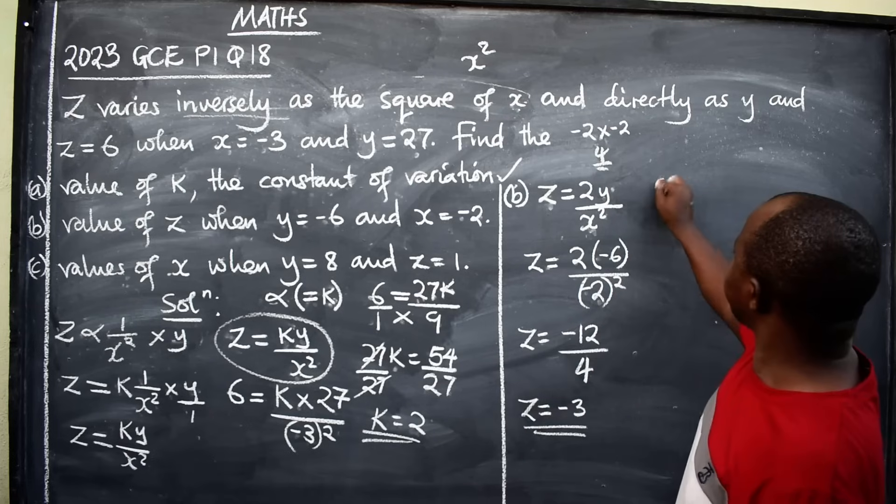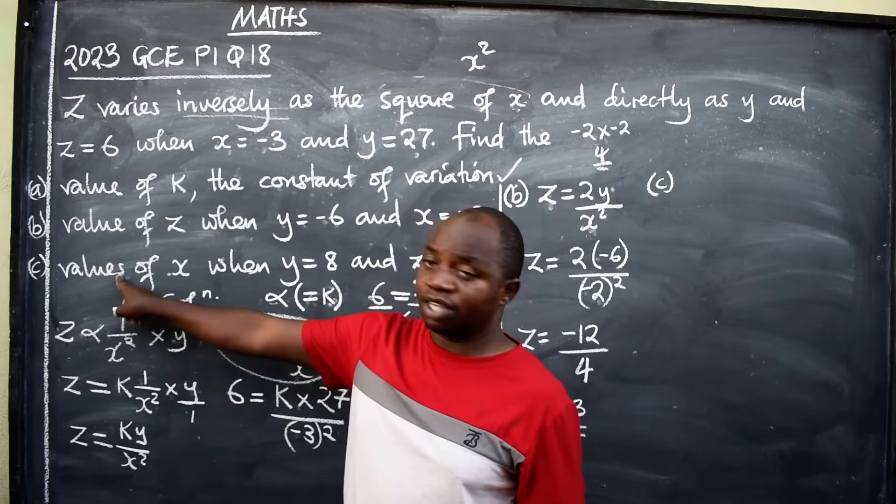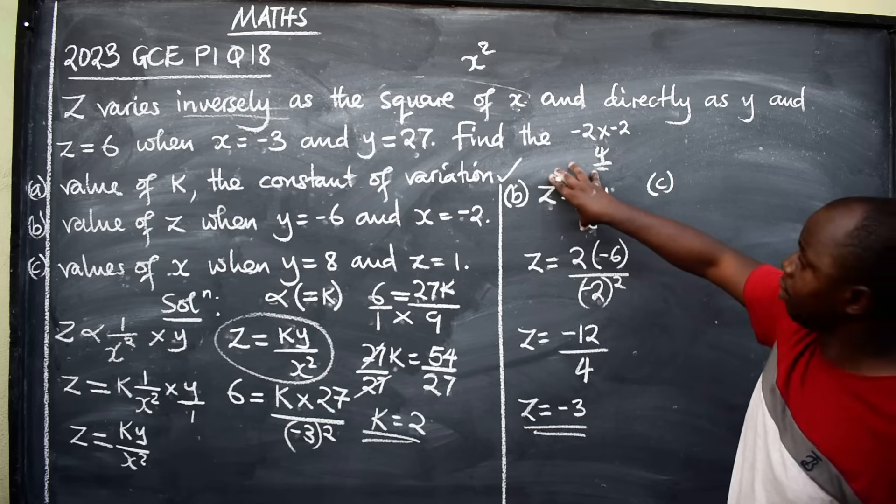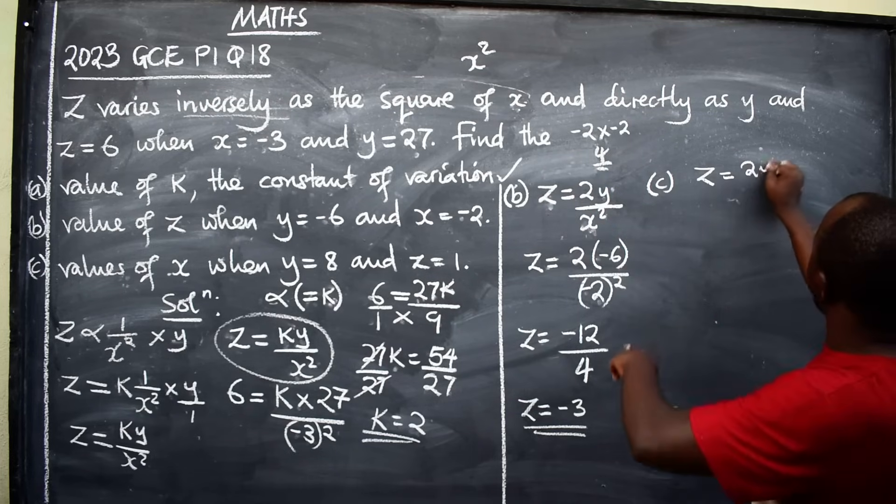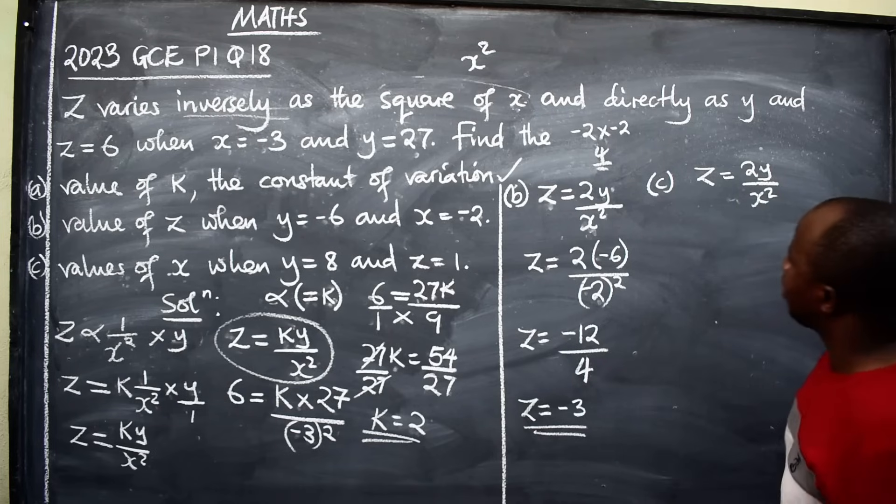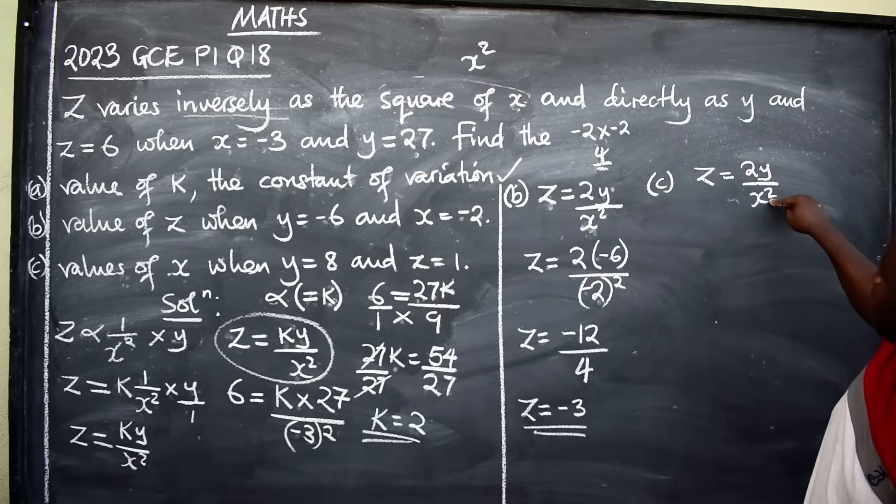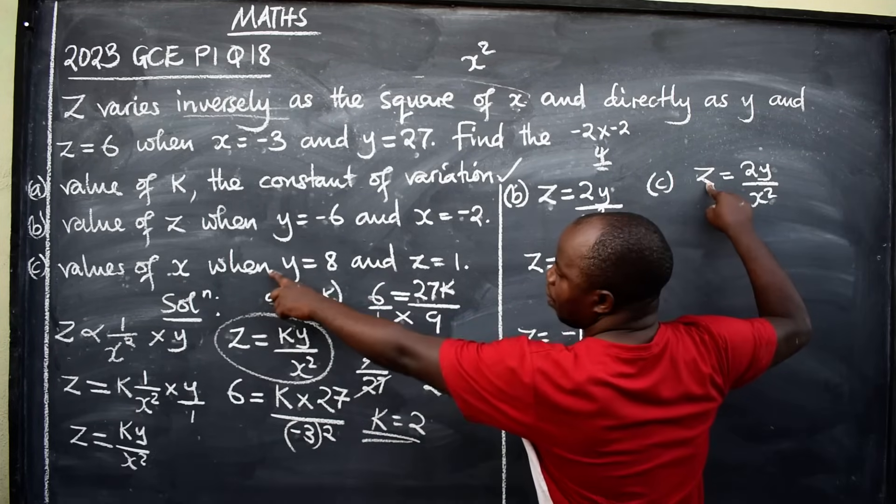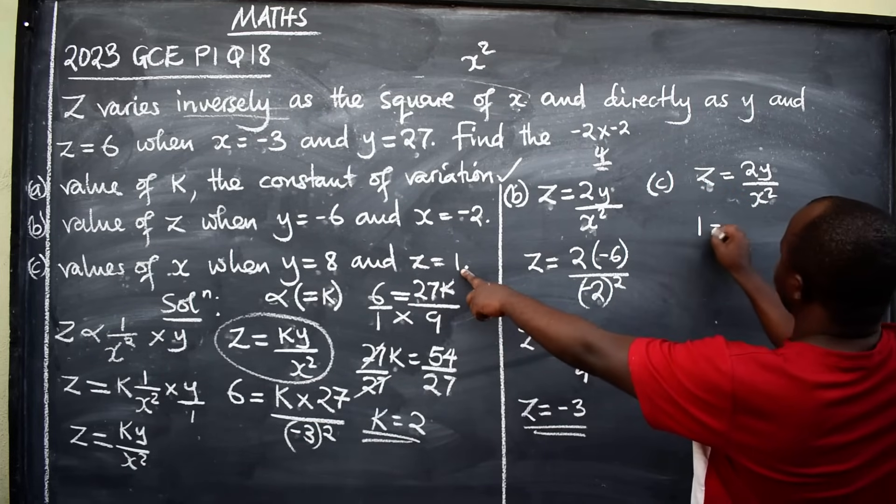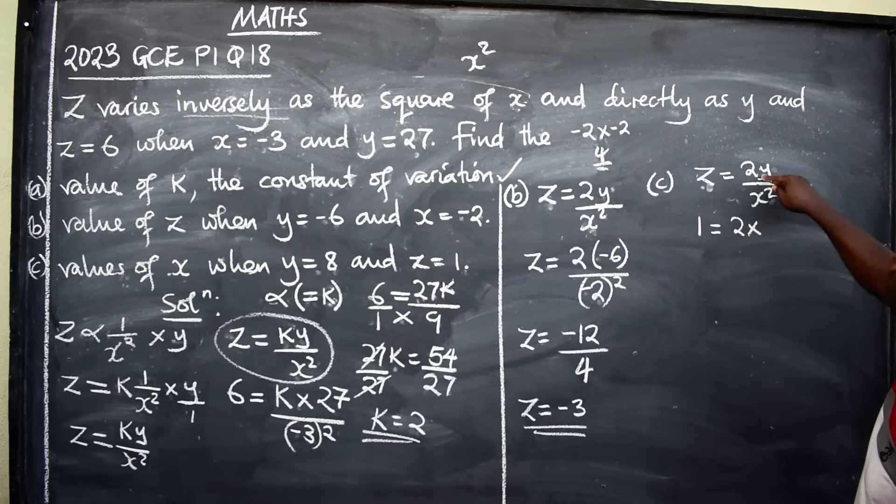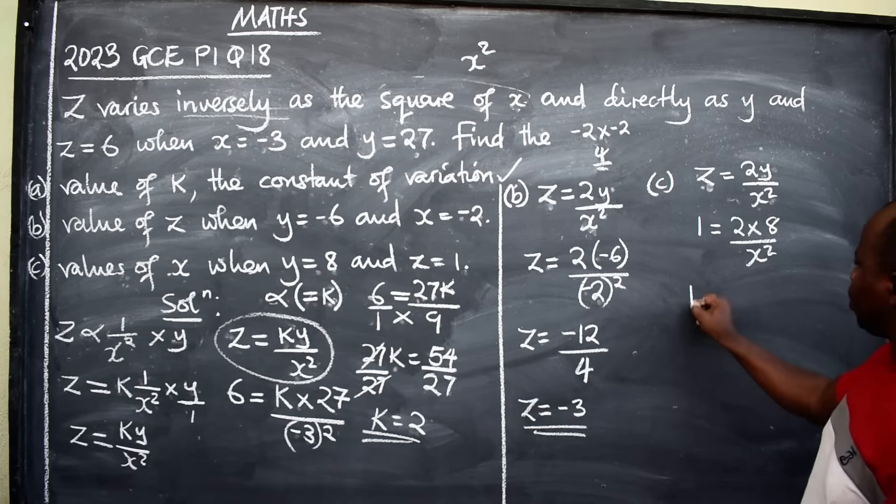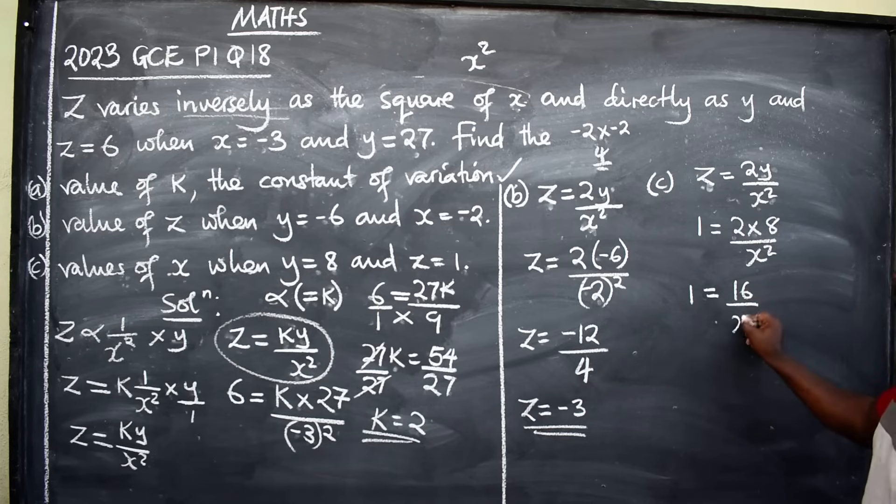Third part. See. We have to find the values, there is S here, of x when y is equal to 8 and z is equal to 1. Again, get the equation connected. Equation is z is equal to 2y over x squared. What are we finding? We are finding the values of x here. We have to be given z and y. What is z? We are saying when y is equal to this, z is equal to 1. So here 1 is equal to 2 times y is 8 over x squared.